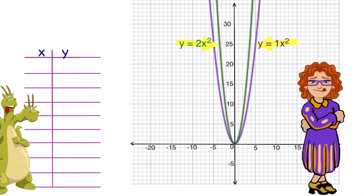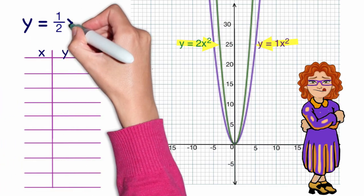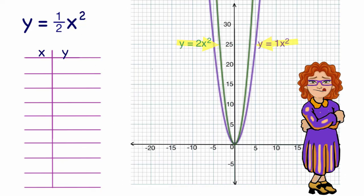Let me see if I've got this. As the number in front of the x squared gets larger, then the parabola gets narrower. So does that mean that if we were to graph 1 half x squared, the parabola would get wider? I'm going to try that and see.